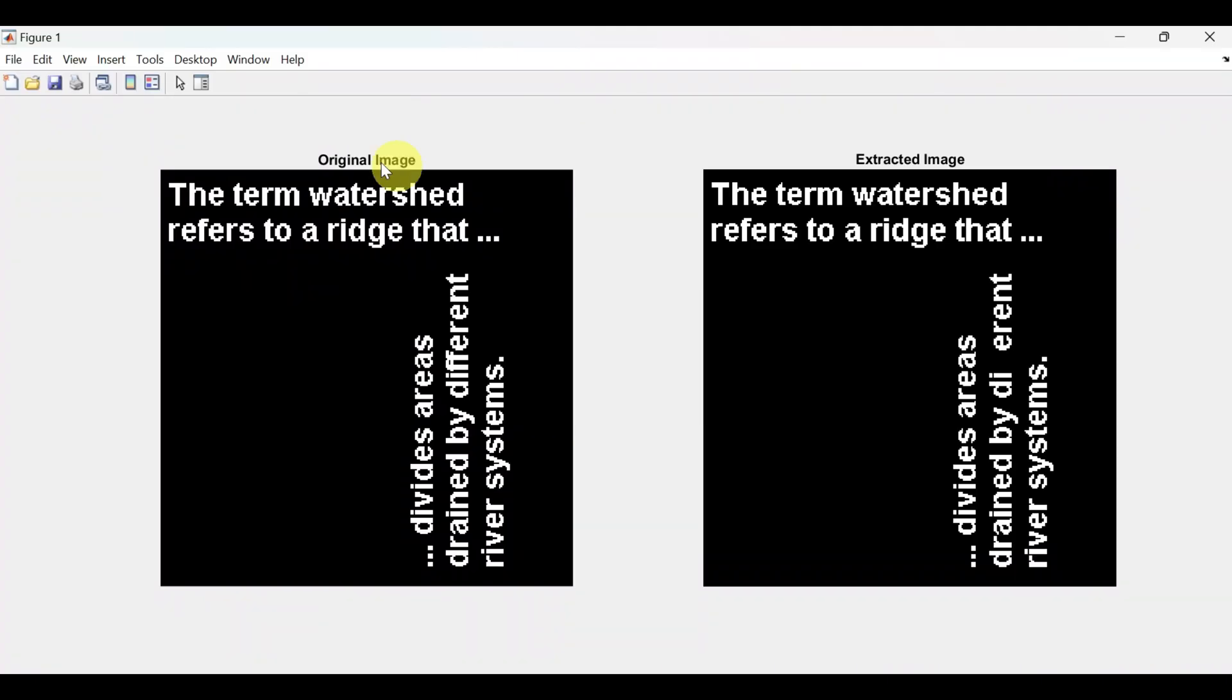Let us run and see the output. So see this is the original image and here these two consecutive f's are the largest components and they are extracted over here or removed over here. That is they are not present in this different word.